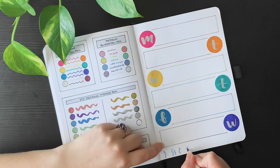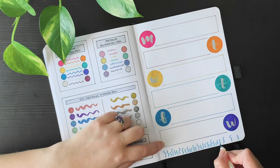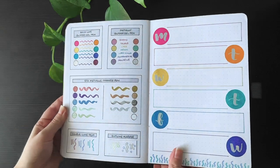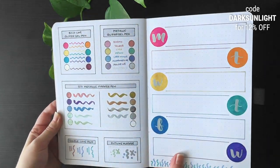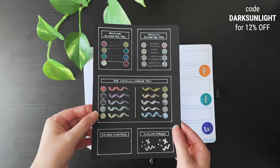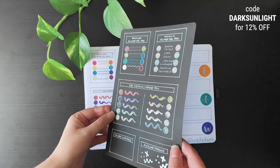As a finishing touch to this layout, I used the double lines pens to add a little striped pattern to the bottom of the page. And that's it! If you're interested in trying any of these products yourself, I'll link to them below and if you use the code DARKSUNLIGHT at checkout, you'll get 10% off! I hope you enjoyed testing out some fun new pens with me today and, as always, thank you so much for watching! Until next time!